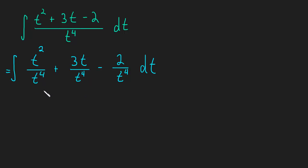And now I'm going to do basically the same idea as we did in the first video where we learned to rewrite. We're just going to simplify these exponents. So this is going to be t squared times t to the negative fourth plus 3t times t to the negative fourth minus 2 times t to the negative fourth.